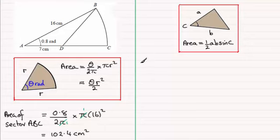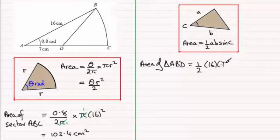So for this one, the area of the triangle ABD equals half times 16 and the 7. So you've got half times 16 times 7, and then sine of the included angle which is 0.8 radians.